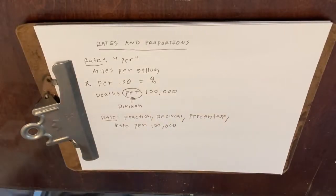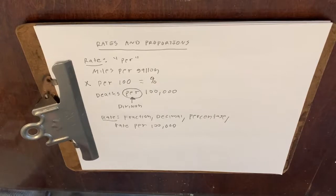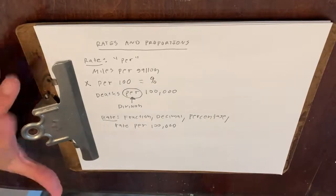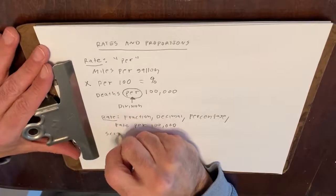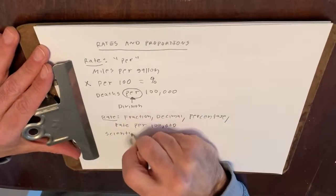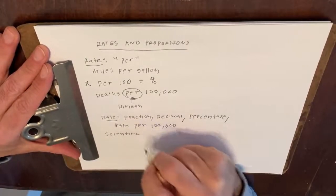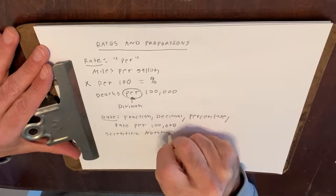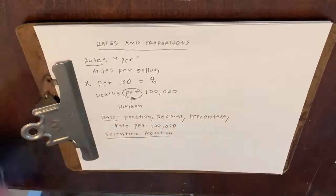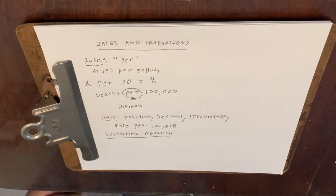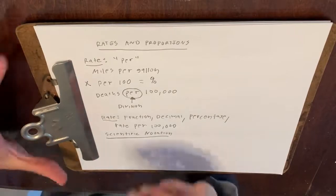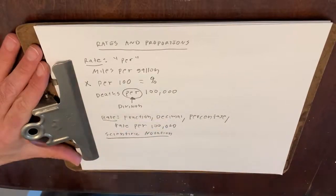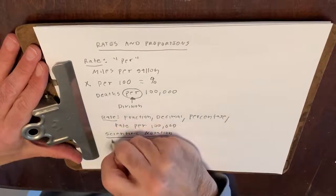When we deal with rates, very often when rates are very small, it's sometimes necessary to use scientific notation. Scientific notation is based on what we call powers of 10.